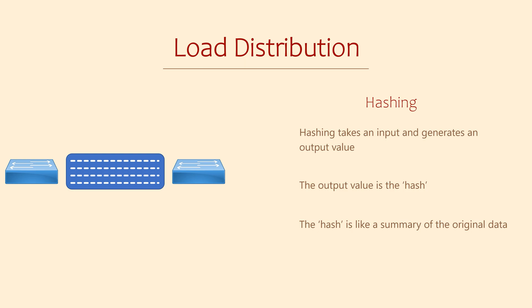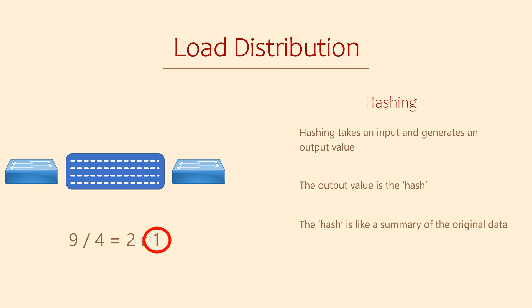Let's take a very oversimplified example. We'll pick a number — let's say 9. This is our original data. Our hashing algorithm will take the original number and divide it by 4. The result is 2 with 1 left over. We could say that the 1 left over is our hash value. We could take any number, apply our algorithm, and get a hash value as a result. Although real hashing algorithms are far more complicated, basically there's an input value, an algorithm, and a hash value as a result.